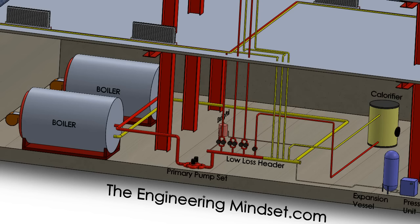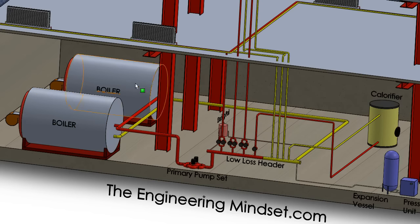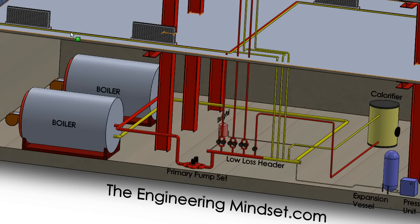Then the pumps will cycle — so for one week it might be pump one, and then for the next week it might be pump two which is the duty pump, and the other pump won't run during that time unless the duty pump receives a fault and can no longer operate. In that case the standby pump will then operate and take over. So you get security built into the system in these configurations. The same with the boilers — this can work exactly the same, so both can run individually or neither. These secondary circuits will take the water from this low loss header and push that up to where it's needed.